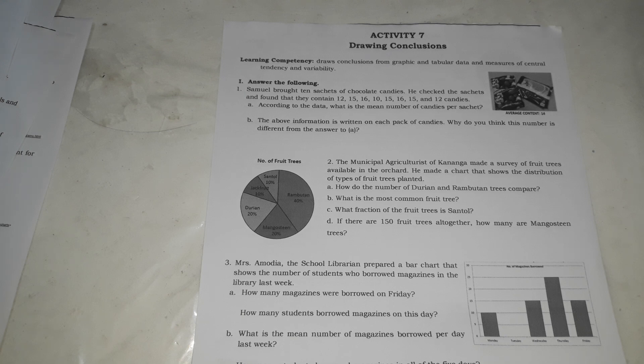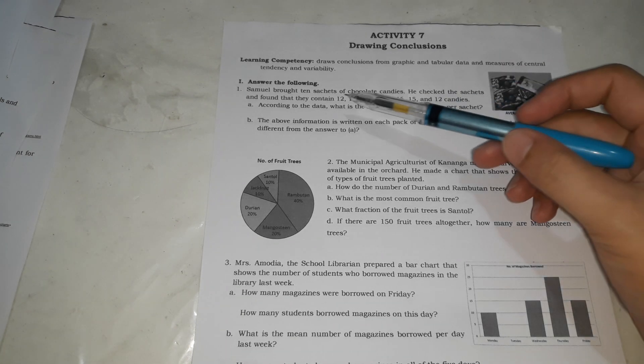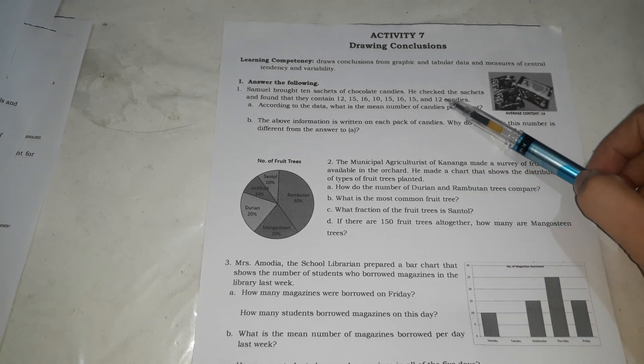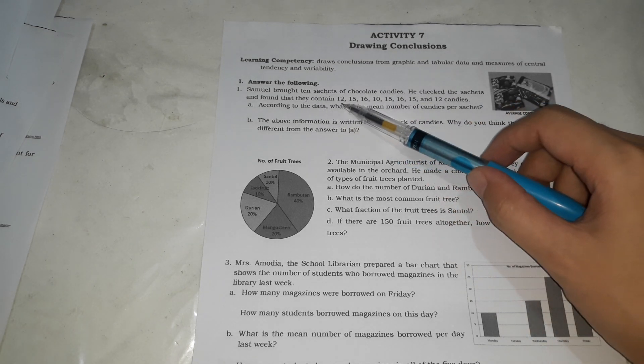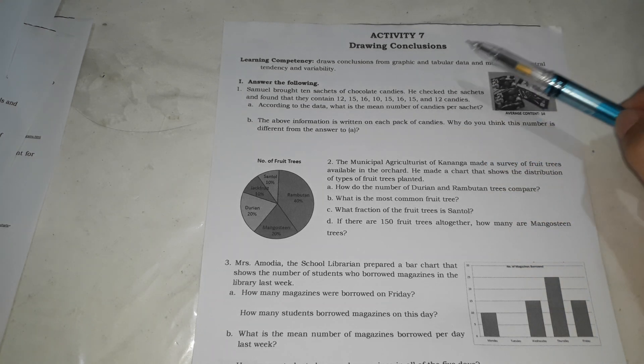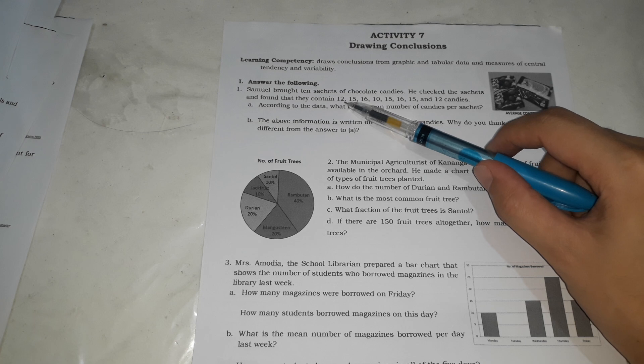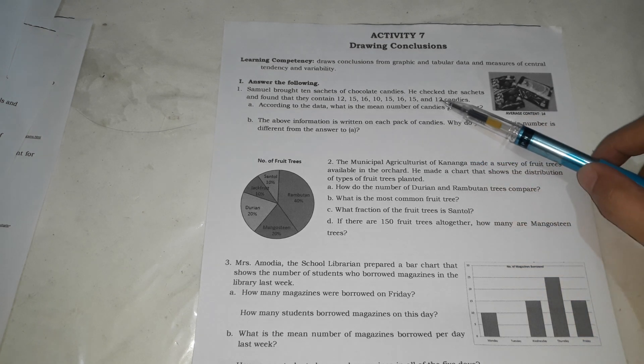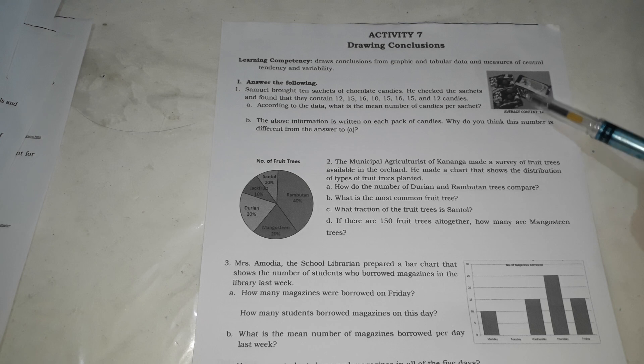For the first one, Samuel brought 10 sachets of chocolate candies. He checked the sachets and found that they contained 12, 15, 16, 10, 15, 16, 15, 12 candies. So, the 10 sachets, one sachet is only 12, one is 15, one is 16, so on and so forth.